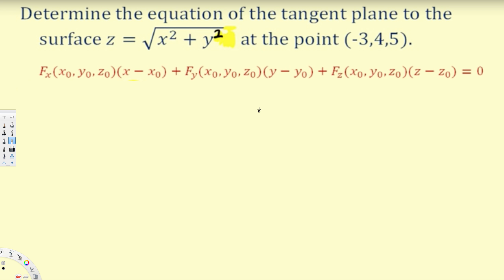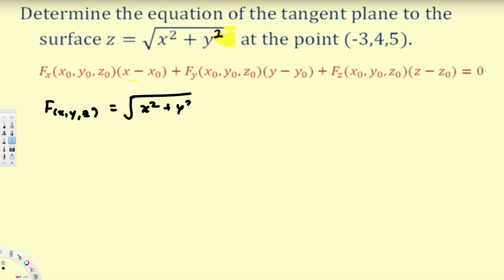The first thing we have to do is rearrange this equation and equate it to 0. So F(x, y, z) is going to be equivalent to √(x² + y²) minus z, and that's going to be equal to 0.